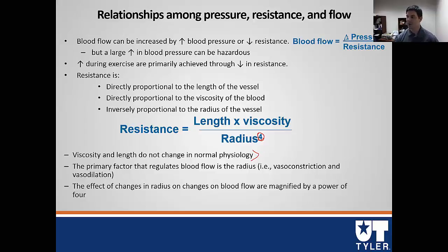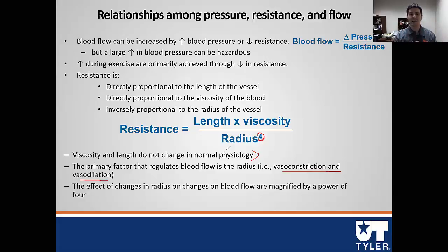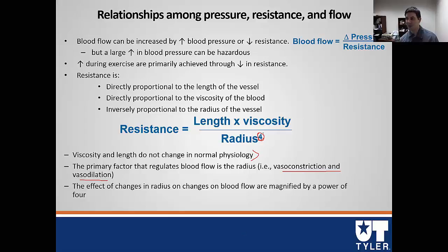Therefore, the way we regulate blood flow is by altering vasoconstriction or vasodilation. Constricting means making the radius of the vessel smaller, whereas vasodilation means making the radius much larger. Small changes in the diameter or radius of these vessels make a huge difference because everything is raised to the fourth power — tiny changes will have a huge effect on resistance.